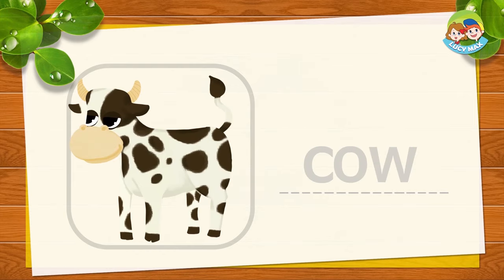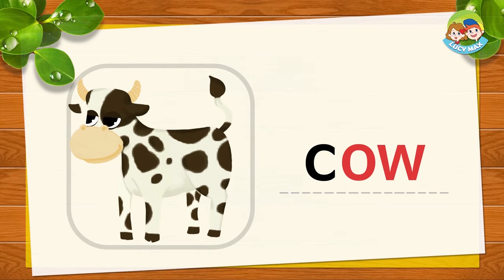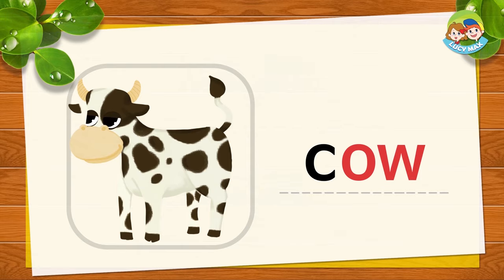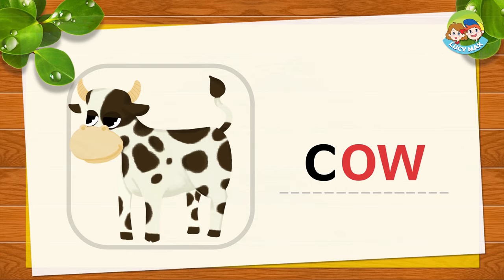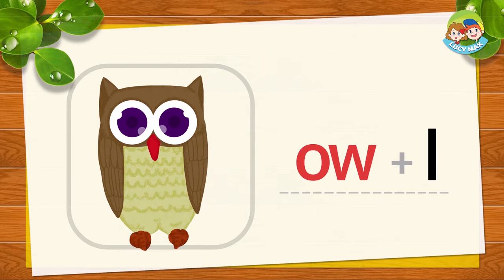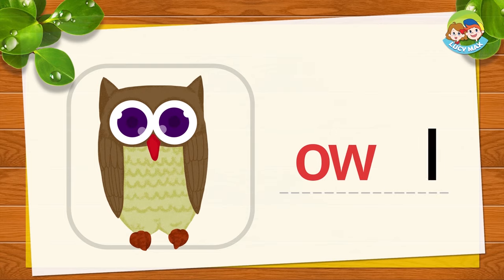This is a cow. K and OW together is cow. K, OW, cow. Now you try. Very good. This is an owl. OW and L together is owl. OW, L, owl.